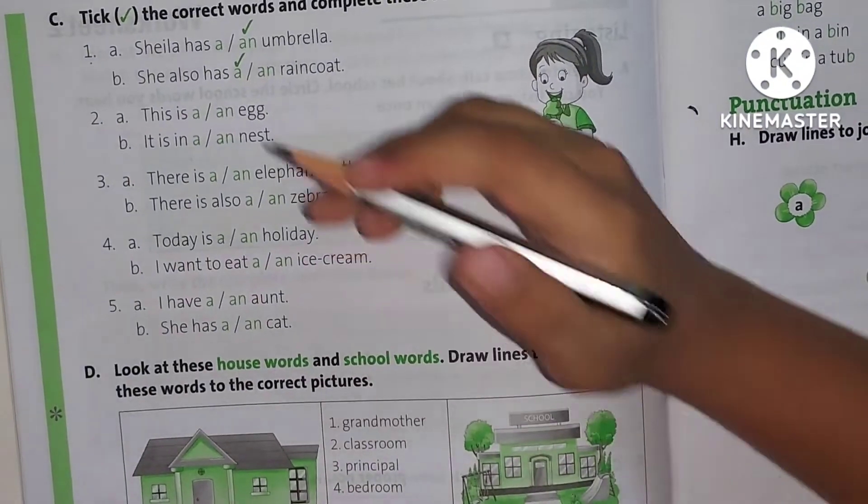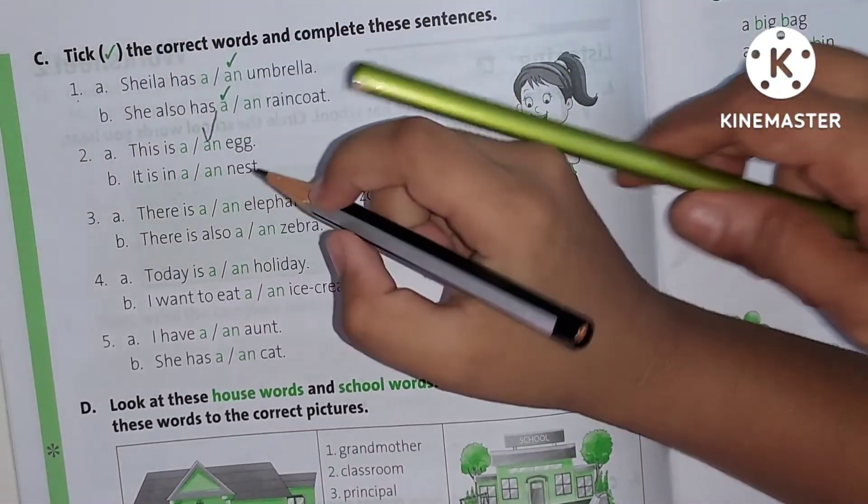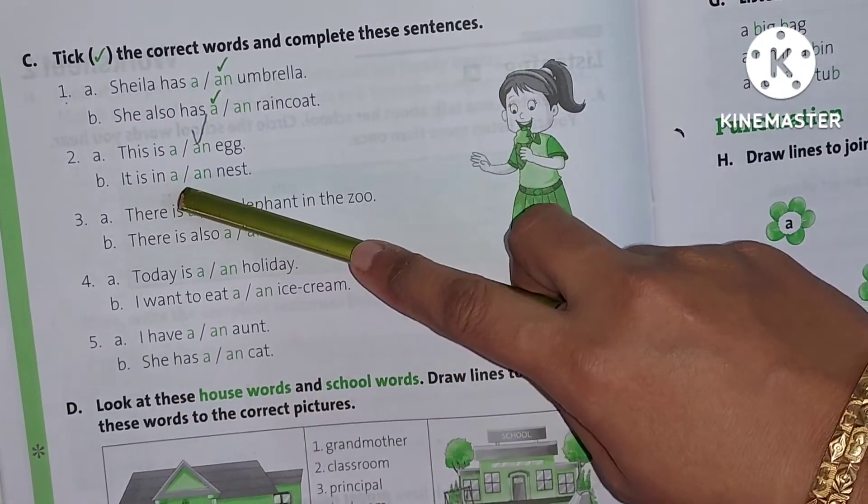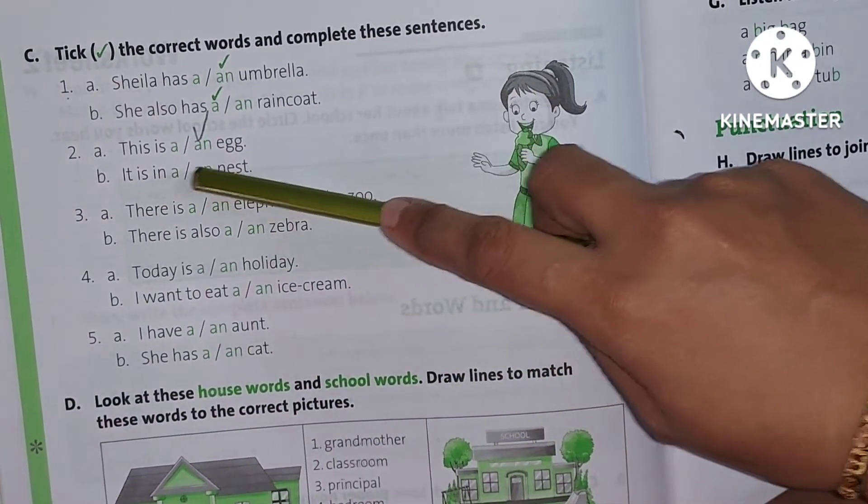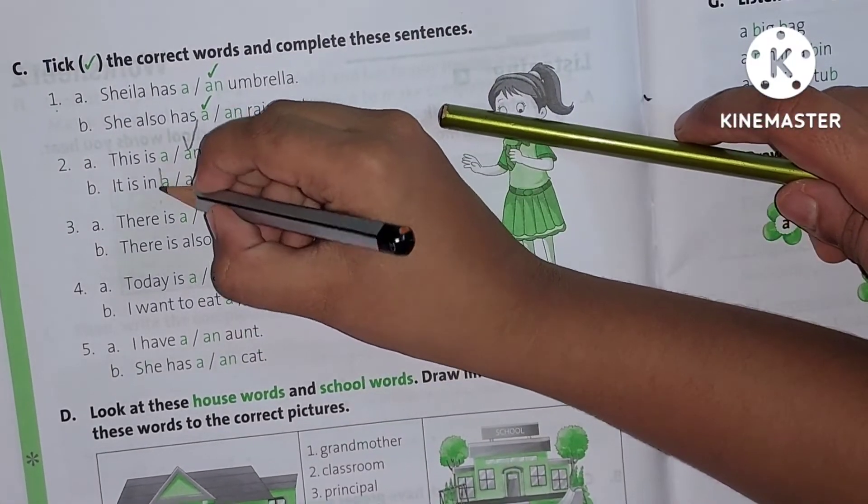It is in a nest. A or AN? A. Good. It is in a nest.